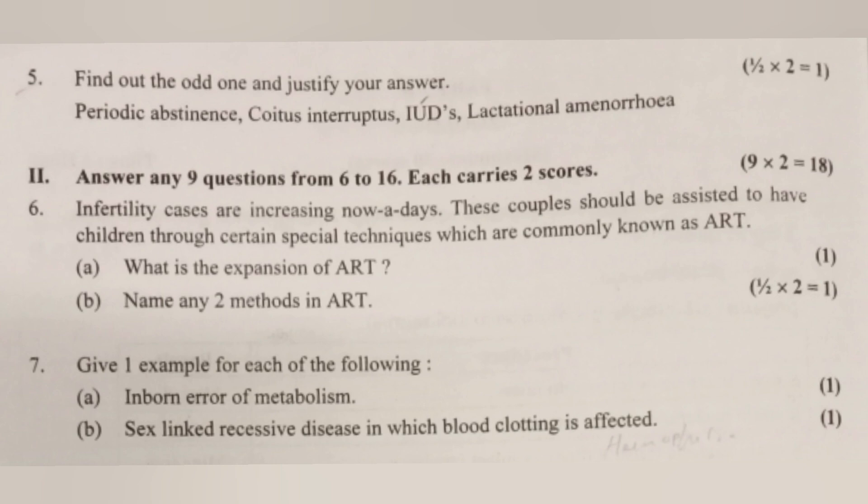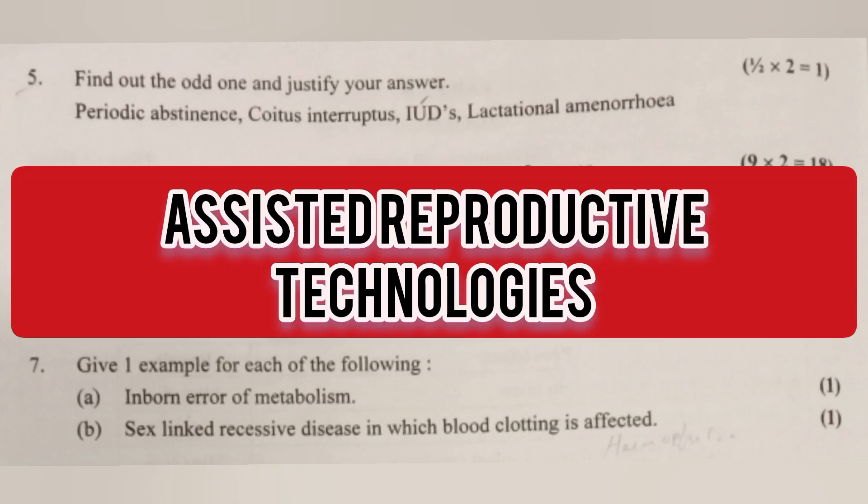Question 6: Infertility cases are increasing nowadays. Couples should be assisted to have children through certain special techniques commonly known as ART. A. What is the expansion of ART? Answer: Assisted Reproductive Technologies.